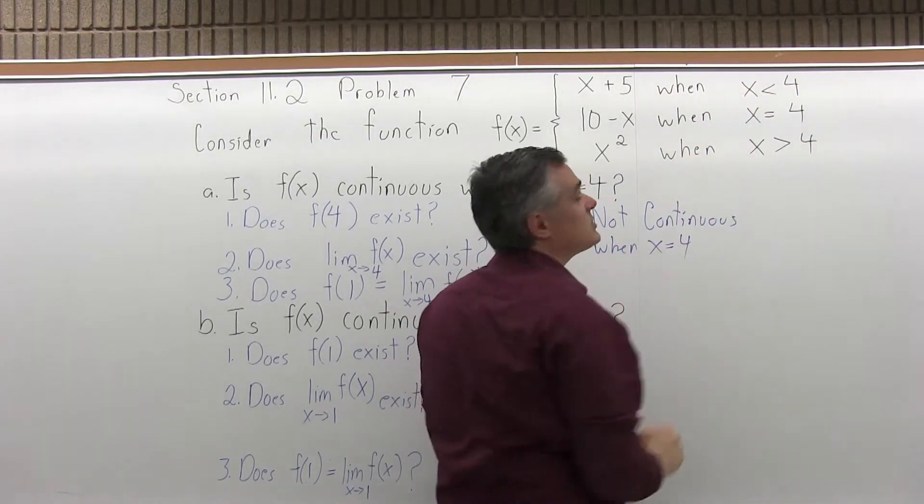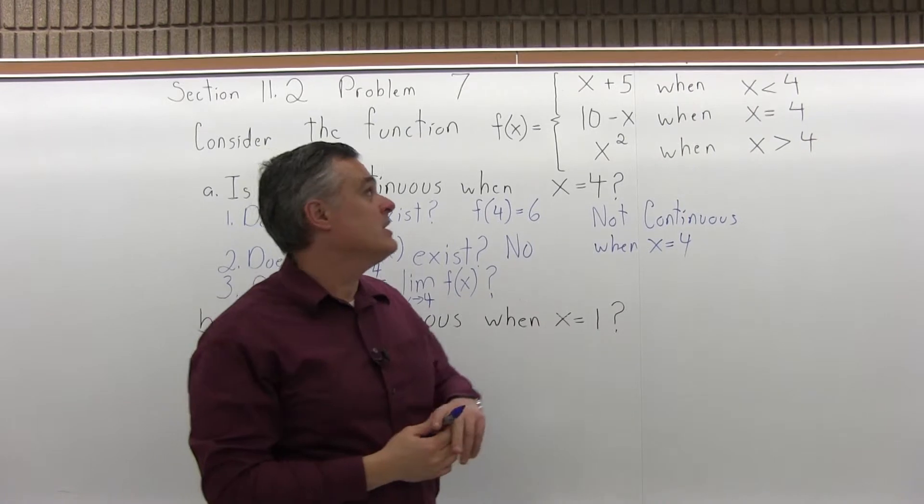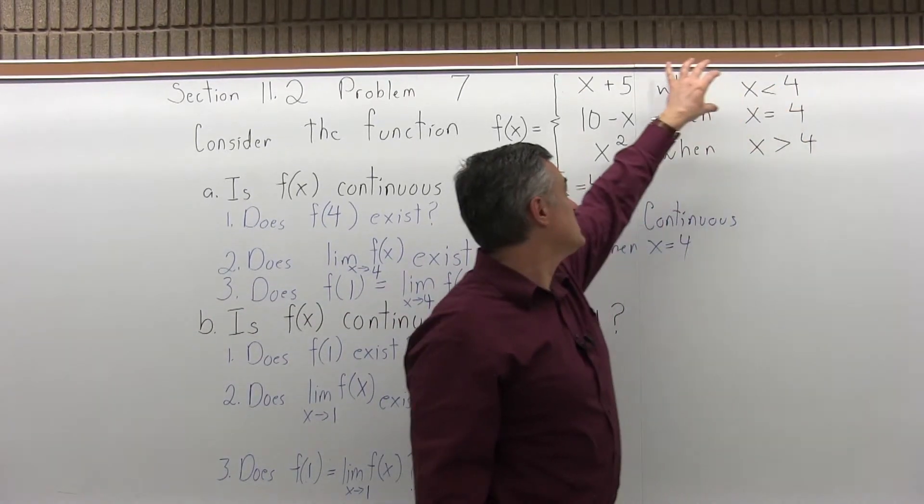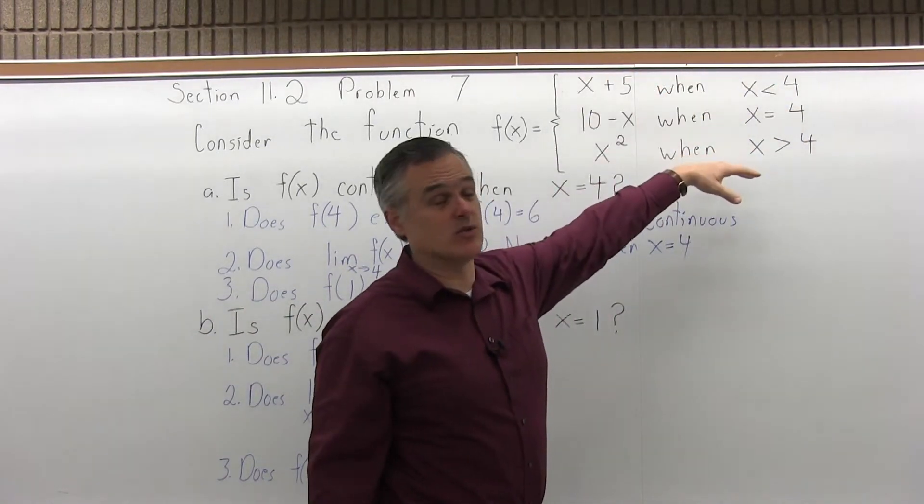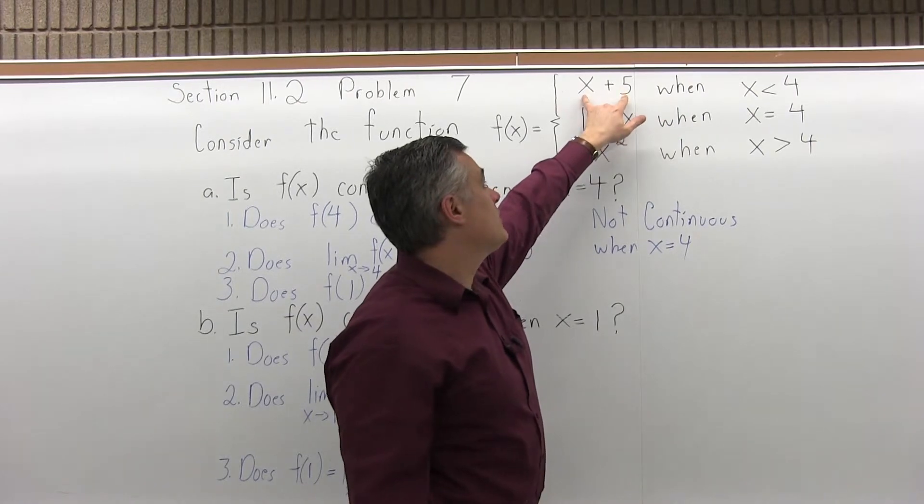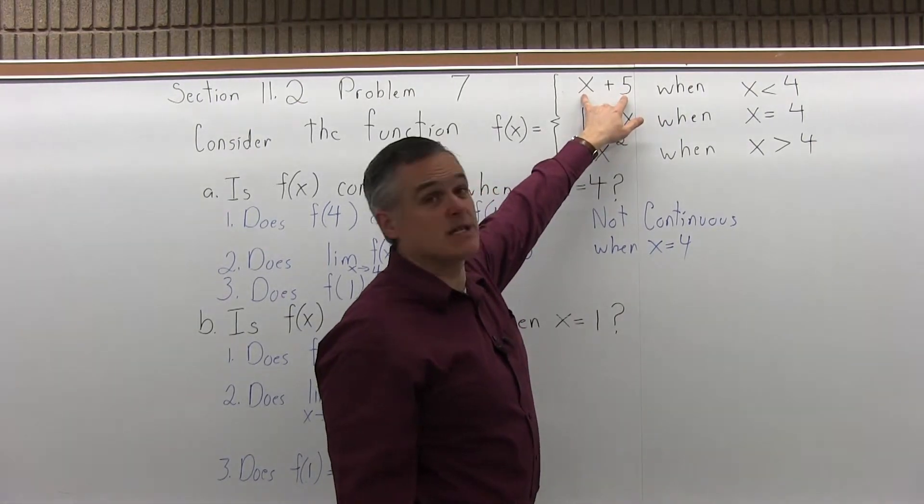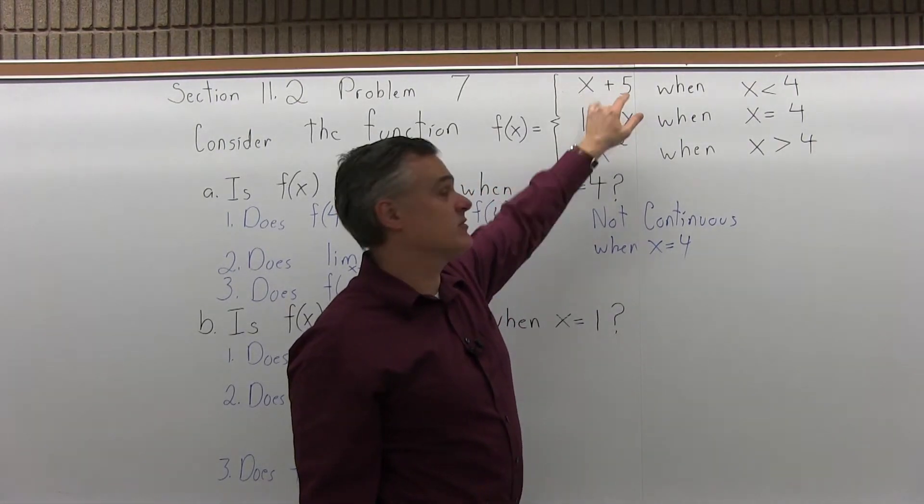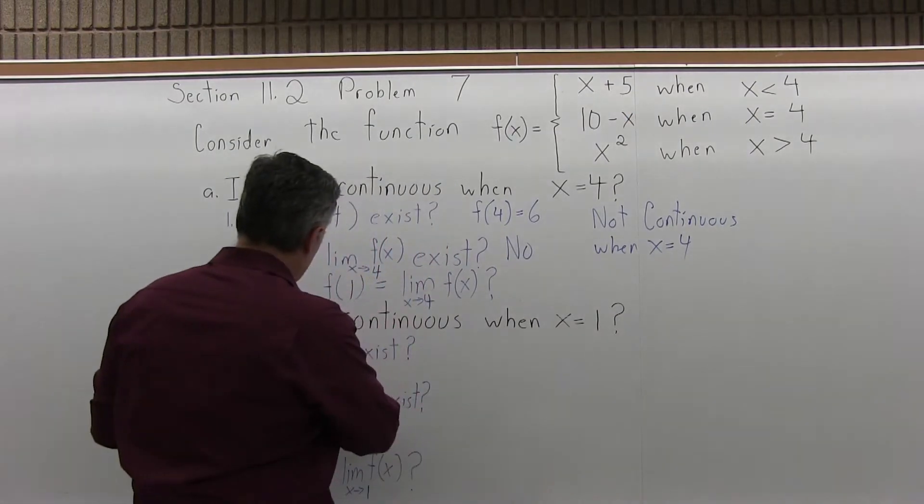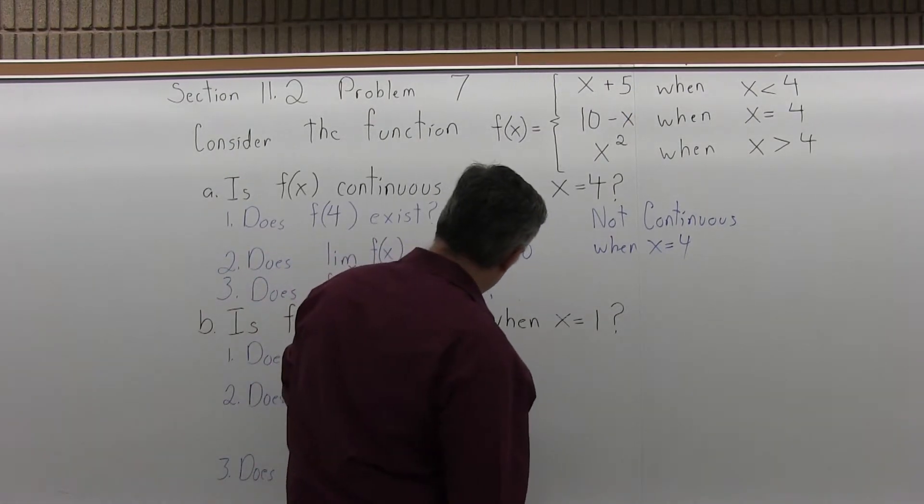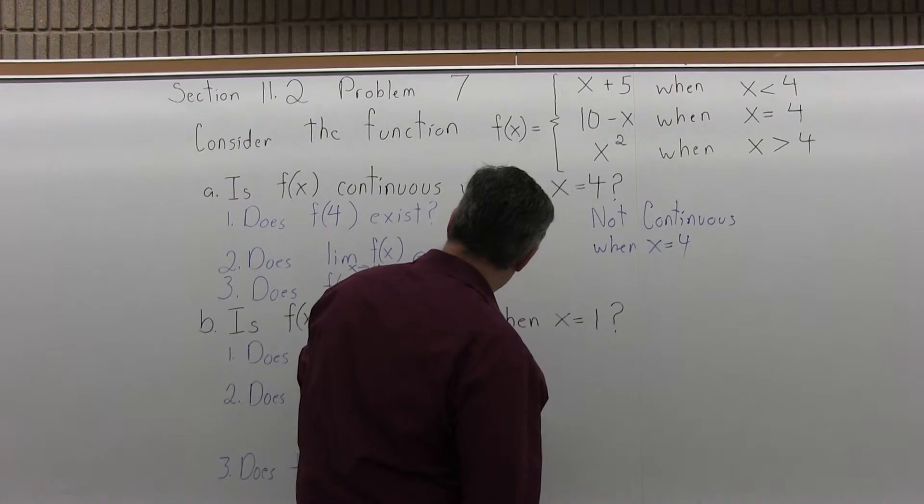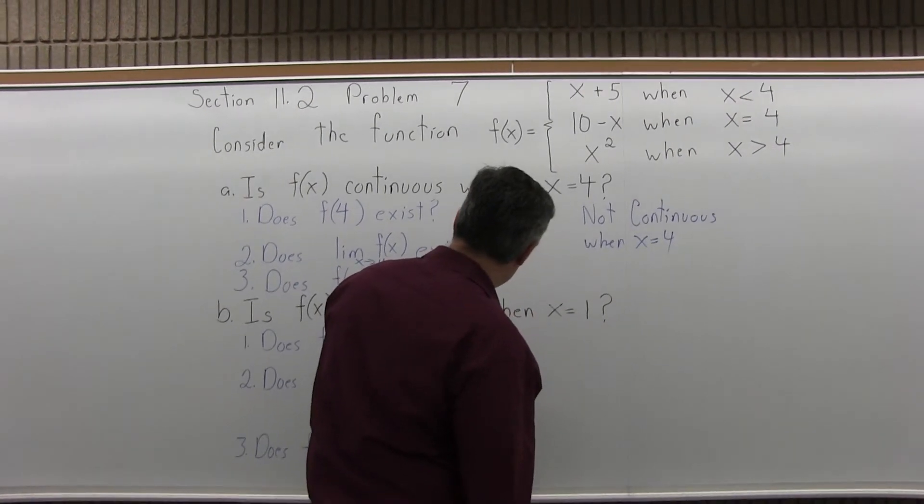I would use the top branch to use an input of 1. 1 is a smaller input than 4, so it's saying use the top branch, and for that I can just ignore the other two. When I put in a 1, my output would be x plus 5, or in this case 1 plus 5, which is 6. So in part B, the answer to number 1 is f of 1 equals 6.